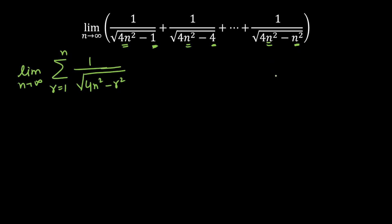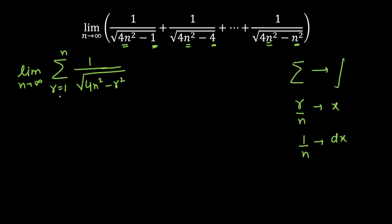In this type, the first thing we are going to do is convert the summation into integration. We have to convert r/n as x and 1/n as dx. To calculate the lower and upper limits of integration, we take the lower limit of summation, divide by n, and take the limit as n tends to infinity. Similarly for the upper limit. There is a separate video on this type of question — I will give you the link.